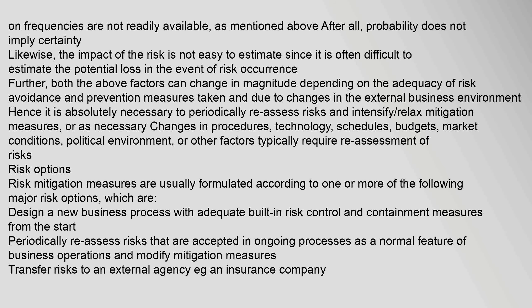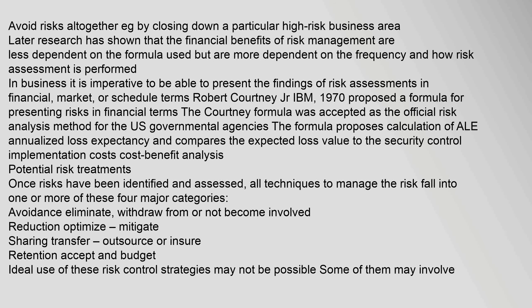Risk mitigation measures are usually formulated according to one or more major risk options: design a new business process with adequate built-in risk control from the start; periodically reassess risks accepted in ongoing processes; transfer risks to an external agency such as an insurance company; or avoid risks altogether by closing down a high-risk business area. Robert Courtney Jr. (IBM, 1970) proposed a formula for presenting risks in financial terms — the Courtney formula — accepted as the official risk analysis method for U.S. governmental agencies, using ALE (Annualized Loss Expectancy) and cost-benefit analysis.